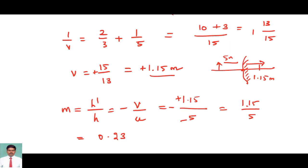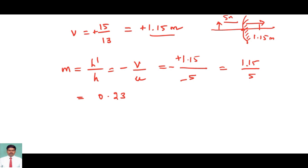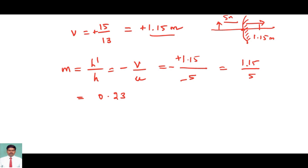I can rewrite the equation as h prime by h equals 0.23. h is the height of the object, h prime is the height of the image. So h prime equals 0.23 times h. That means the image height will be 0.23 times less than the object height.